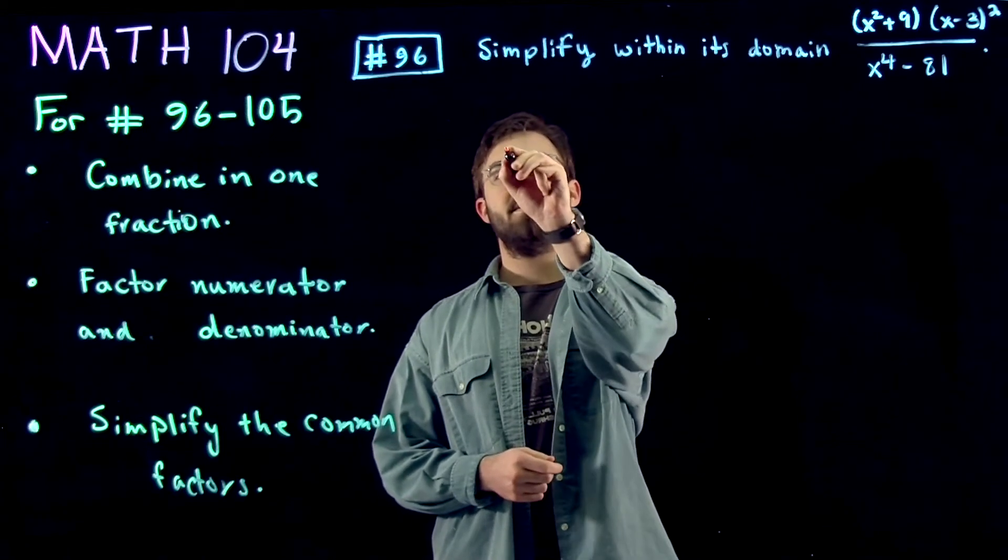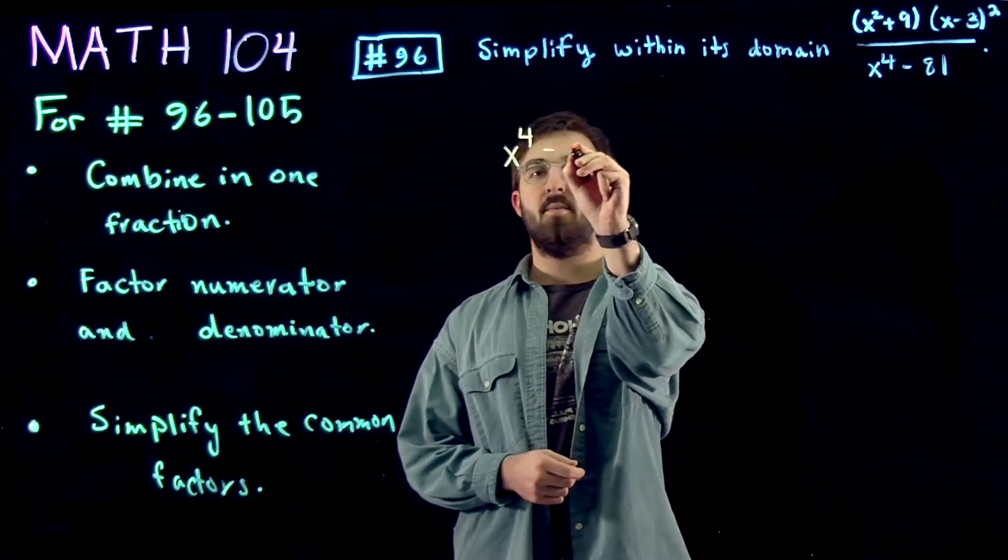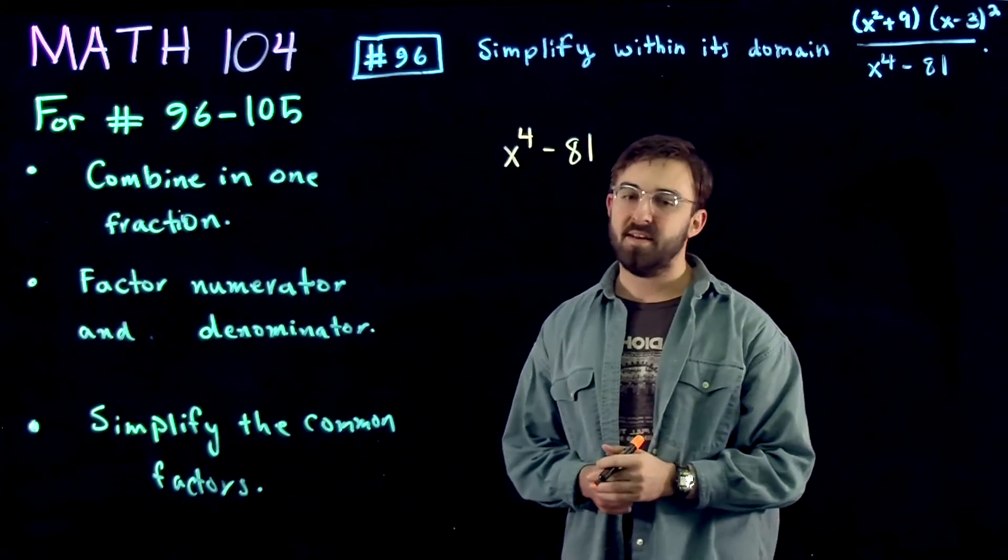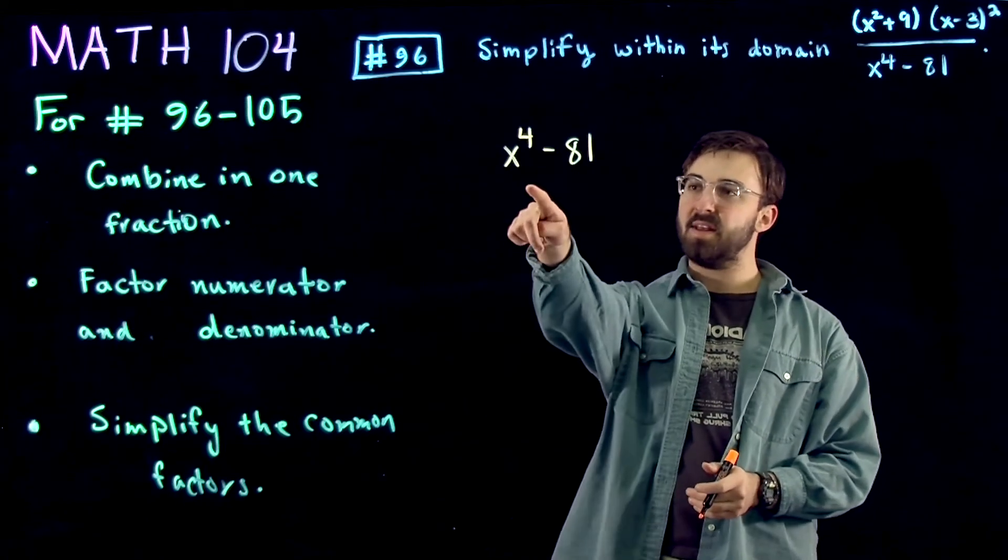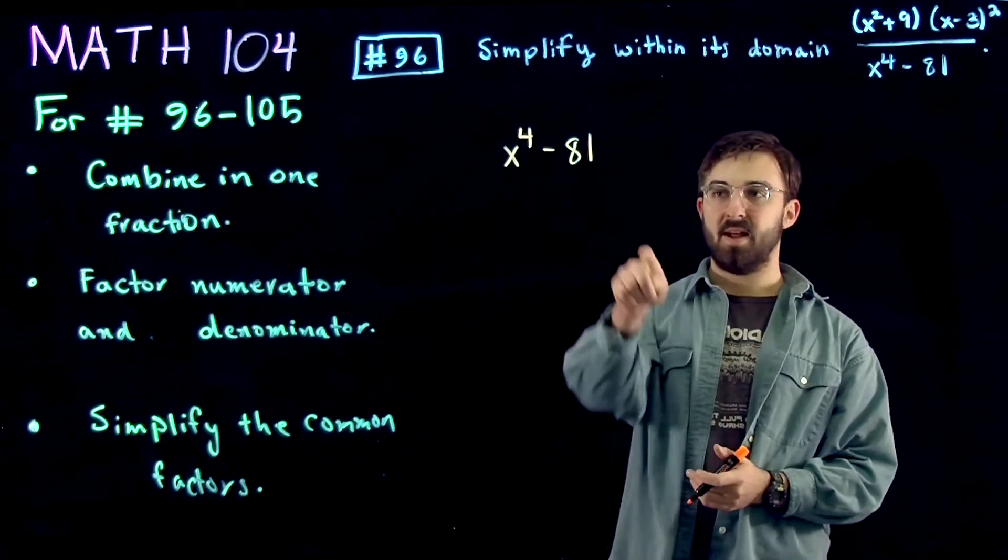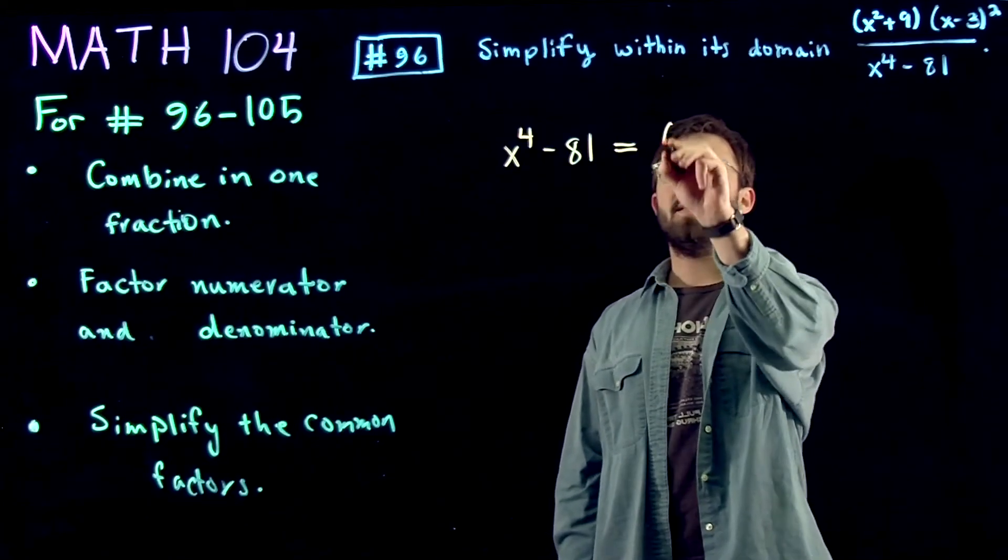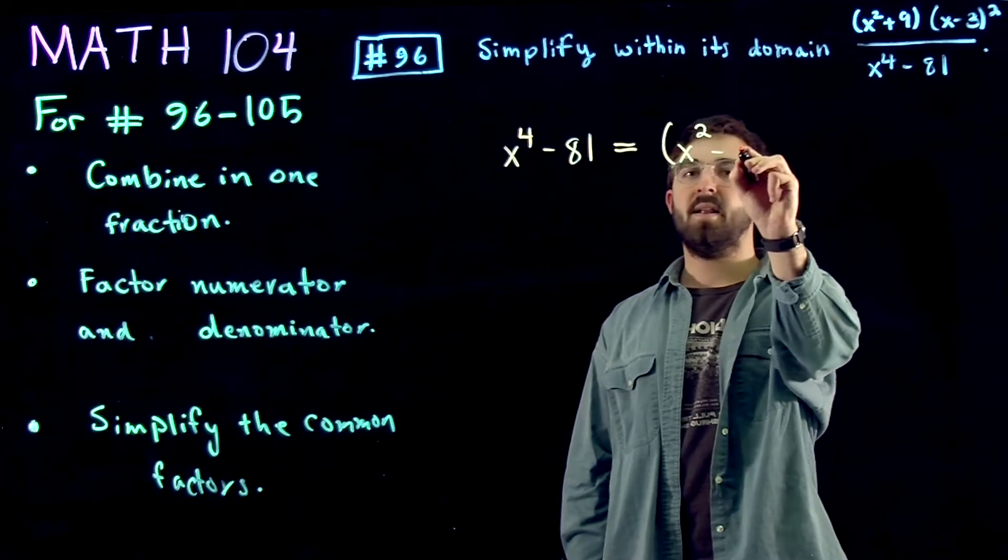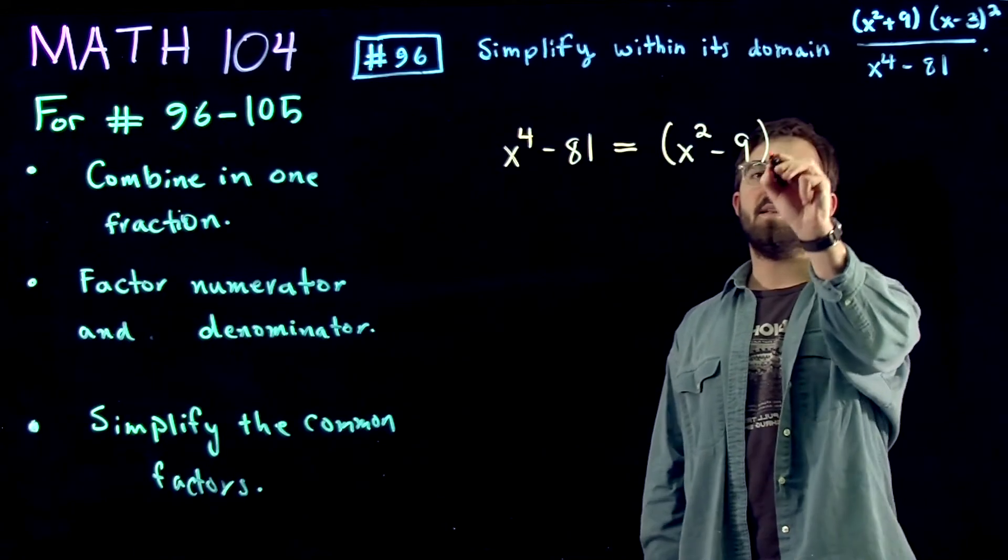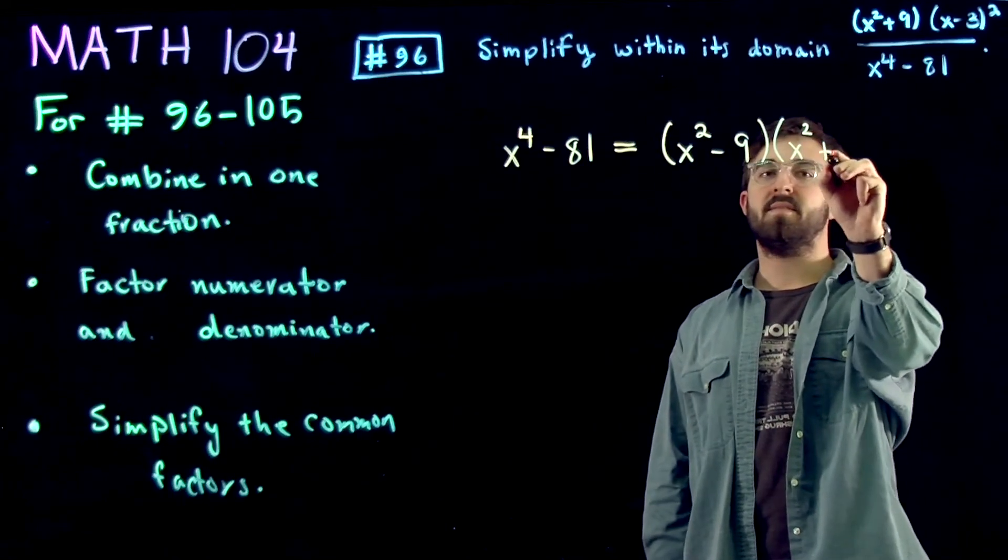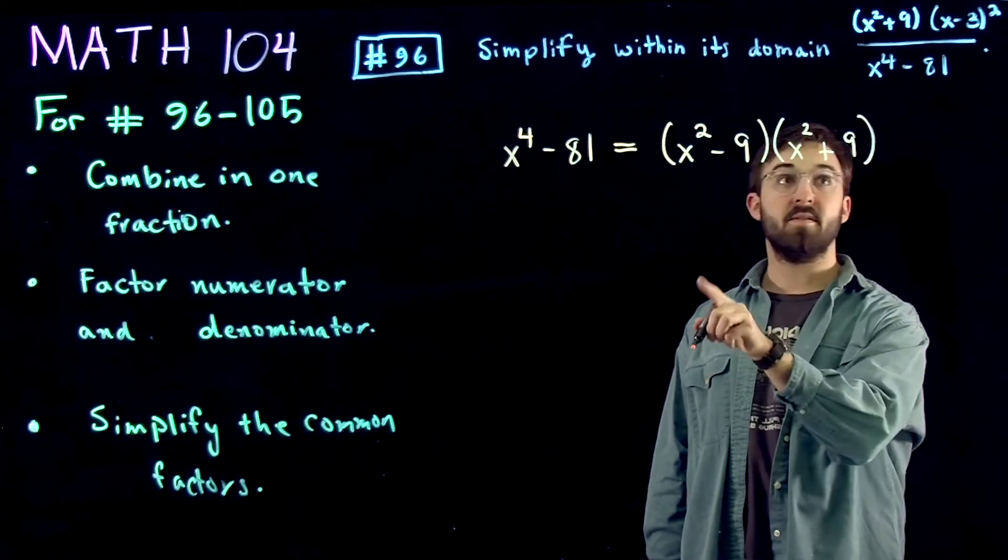So if we look at x to the fourth minus 81, you can factor this using the difference of squares. This is really x squared squared, and this is really 9 squared. So what this turns out to be is x squared minus 9, and then x squared plus 9. So this is your denominator here.